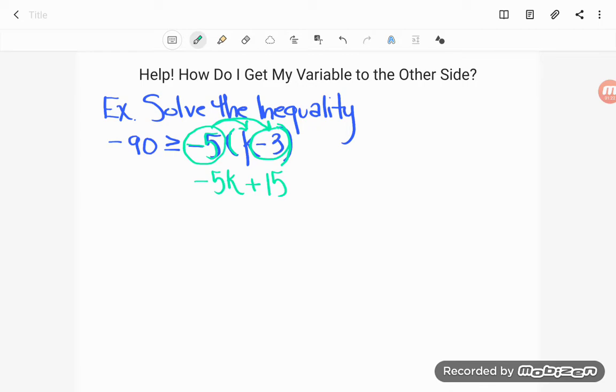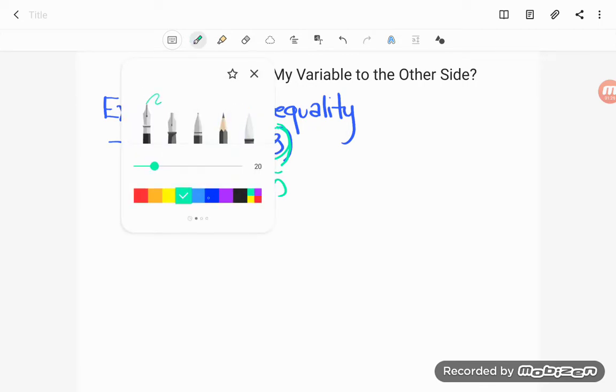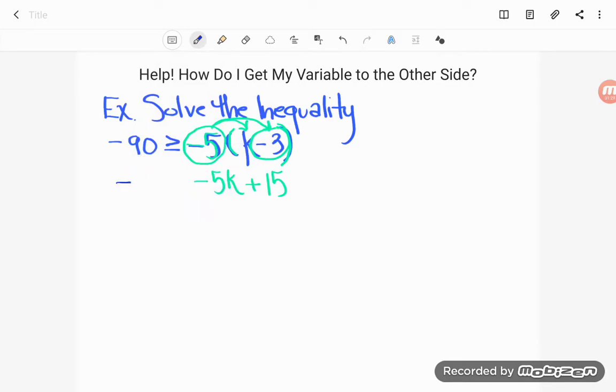Now there is no work to do on the left hand side. That's just the number negative 90. So it's just going to drop down. I'm not going to do anything else with it. And I get this new inequality: negative 90 is greater than or equal to negative 5k plus 15. And now Megan realized this is all the simplifying I can do. There's nothing left to do on the right hand side.